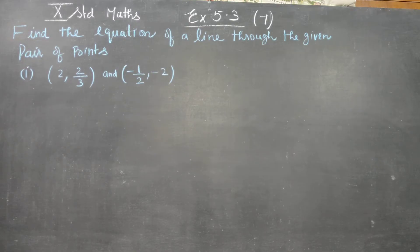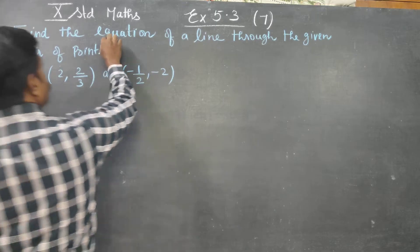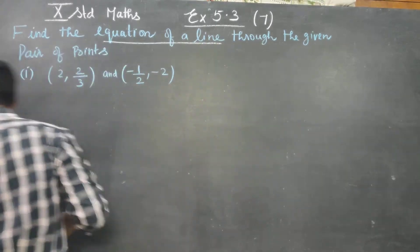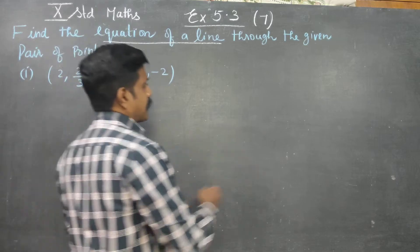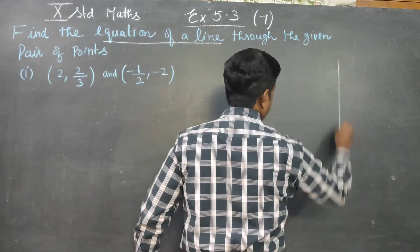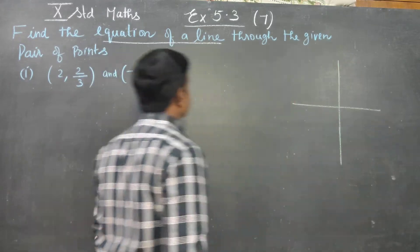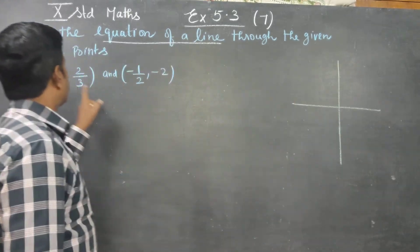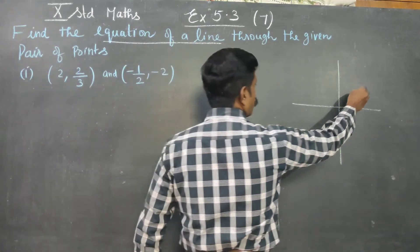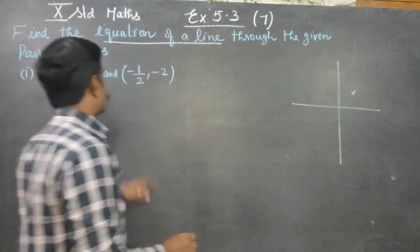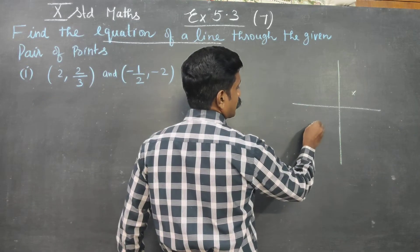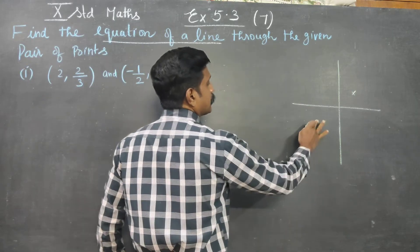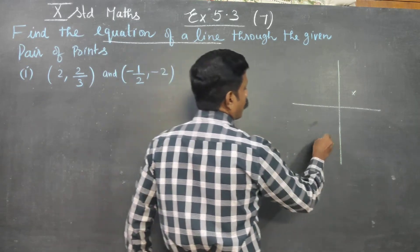They are asking you to find the equation of a line. The equation of a line — using the x-axis and y-axis — the first point is (2, 2/3) and the second point is (-1/2, -2).